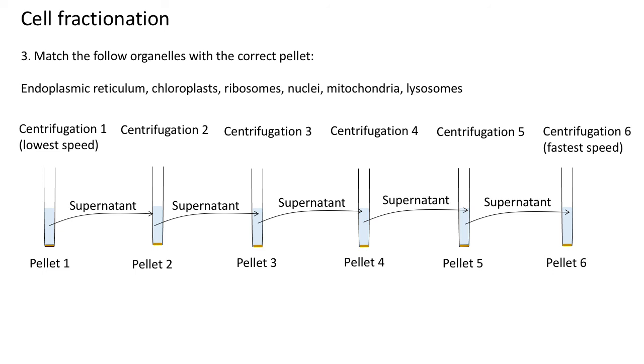Let's go through the answers. Pellet one would have nuclei, and they are the heaviest. Pellet two: chloroplasts. Pellet three: mitochondria. Pellet four: endoplasmic reticulum. Pellet five: lysosomes. And finally, pellet six: ribosomes, and they are the lightest.